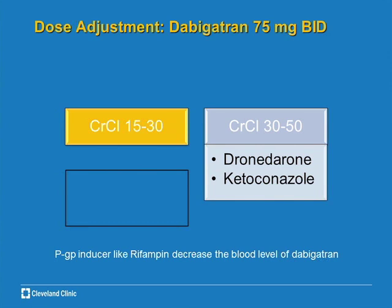In the United States, we don't have the 110 mg dose. We have the 75 mg — which was never studied — and the 150 mg twice a day. I use the 75 mg twice a day in patients with renal dysfunction where creatinine clearance is between 15 and 30, or when using this medicine in conjunction with dronedarone or systemic ketoconazole, because both medications can increase the concentration of dabigatran in the body.